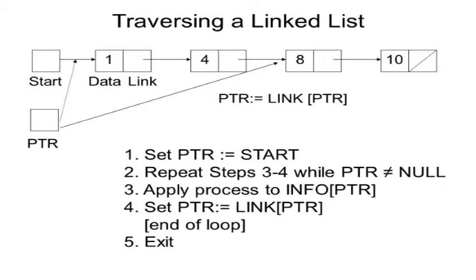Unless ptr is not equal to null, it will keep on repeating — displaying whatever info is present in the desired linked list. We repeat steps three to four, then apply the process: info ptr shows whatever info is present in ptr, which links to the next pointer. This whole loop keeps working again and again, and as soon as it equals null it will exit from the program.